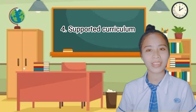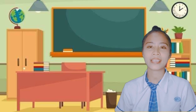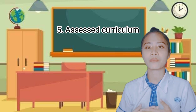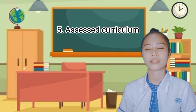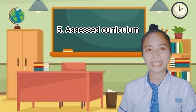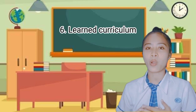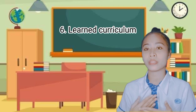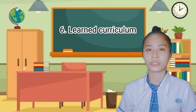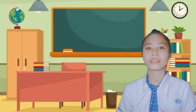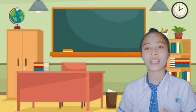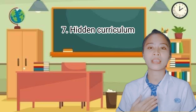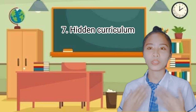Fifth, assessed curriculum — that which is tested and evaluated. Sixth, learned curriculum — what the students actually learn and what is measured. And seventh, hidden curriculum — the unintended curriculum.